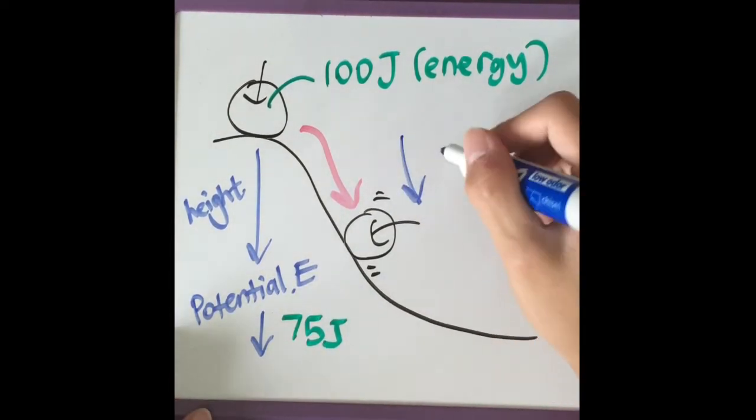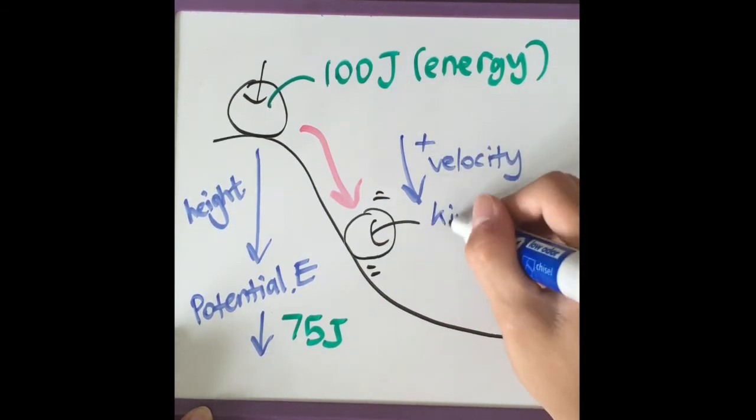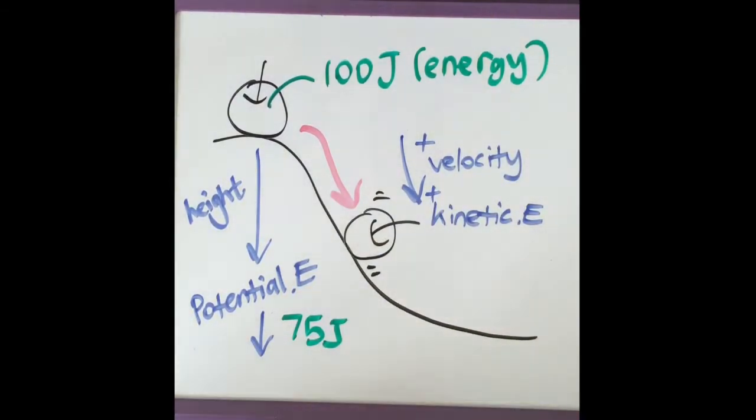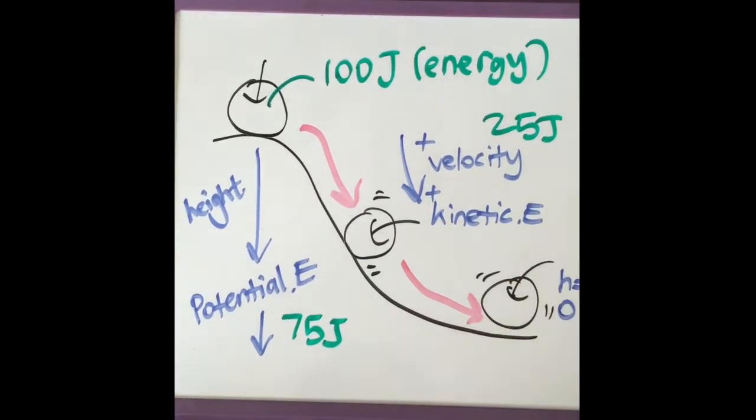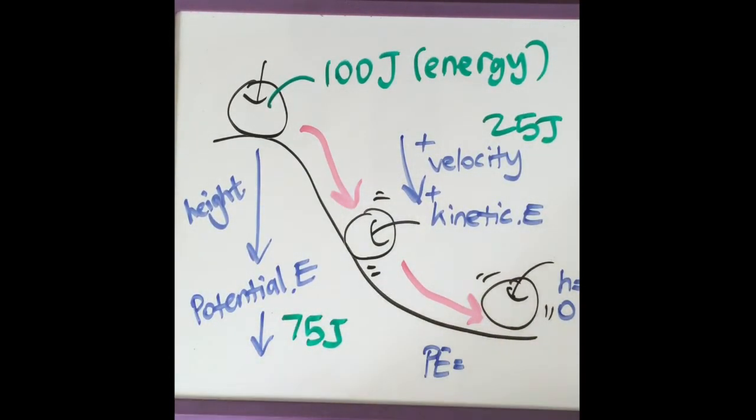When its potential energy drops to 75 joules, its kinetic energy increases to 25 joules as the object gets more speed. At the bottom of the hill, its height will be 0, which means that its potential energy is 0 joules.